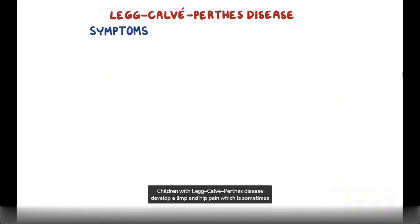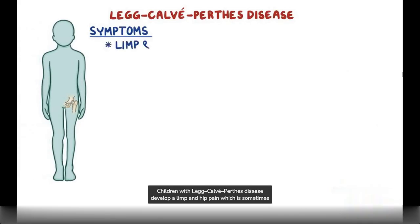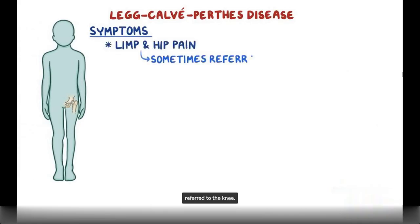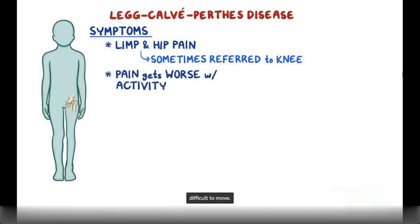Children with Legg-Calvet-Perthes disease develop a limp and hip pain, which is sometimes referred to the knee. The pain usually gets worse with activity, which may even make the affected hip very difficult to move.